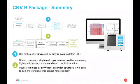In summary, this is a two-step model: step one uses single cell genotype data to detect LOH, and step two derives consensus single cell copy number profiles leveraging both single cell genotype data and single cell read count data. The power of this is that having both information enables you to integrate molecular SNV or indel information with structural CNV data to gain more insights into cancer heterogeneity, which ultimately will have an impact in the clinic.